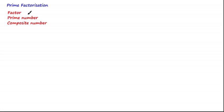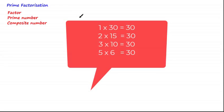So let's take the number 30 for example. Assuming we wanted to find the factors of 30, we ask ourselves, which two numbers do we need to multiply to get 30? Now here are some examples.